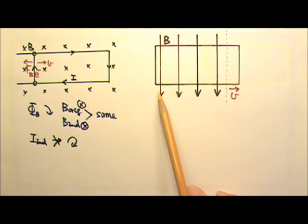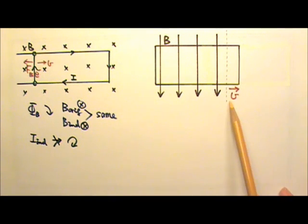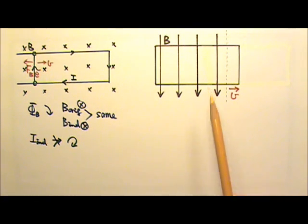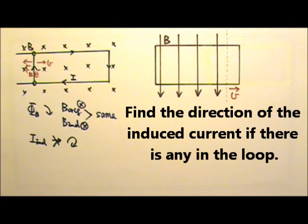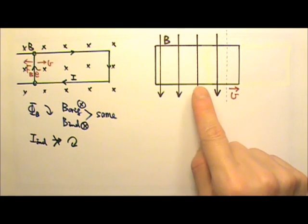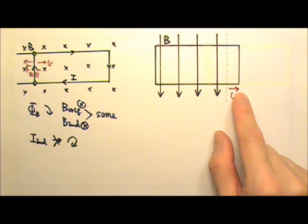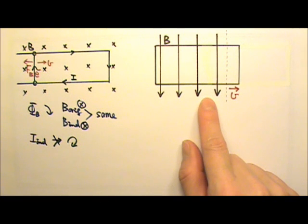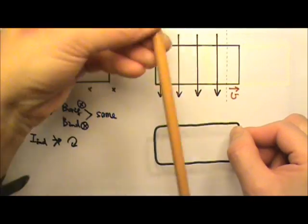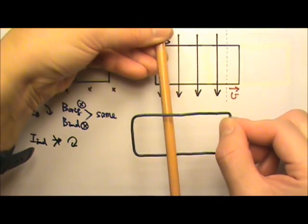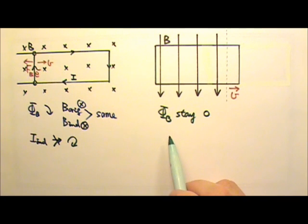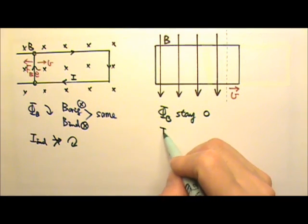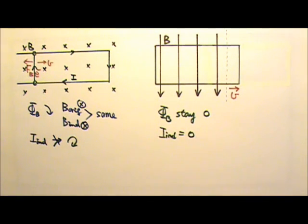Let's try one more problem. A uniform magnetic field exists in a region, and a rectangular wire loop is being pulled out of the magnetic field at speed V. Find the direction of the induced current, if there is any. When the loop is pulled out, we might expect less area in the field — however, how much flux is there through the loop right now? Zero. None of the field lines pass through the wire loop; they pass next to it. So as the loop is pulled out, the flux stays zero, and therefore there is no induced current — and no magnetic resistance force either.